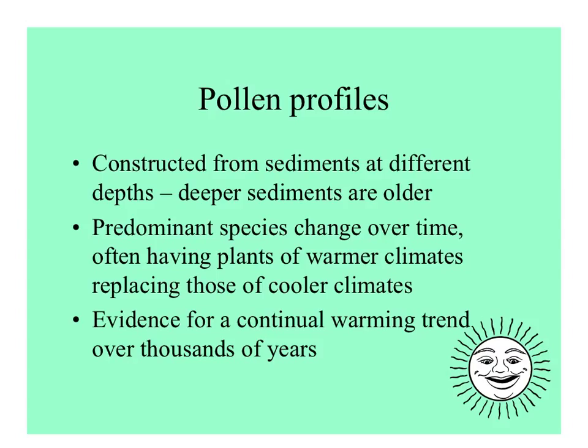These studies have shown that the predominant species change over time. Sometimes in the past there have been plants of warmer climates replacing those of cooler climates, as things changed after the last ice age. So there is long-term evidence for a continual warming trend over thousands of years, even though it may have been exacerbated lately by human influence.